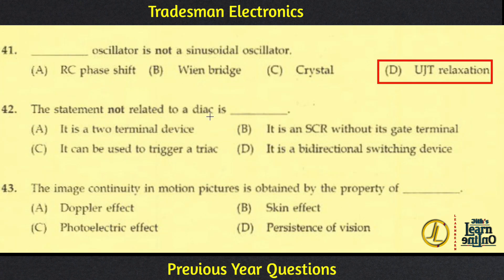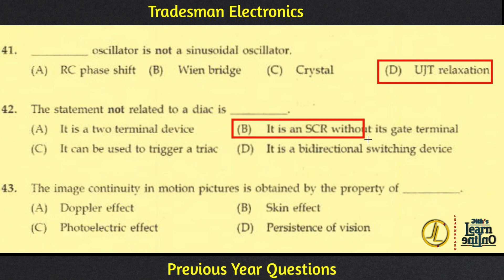The statement NOT related to a DIAC: A DIAC is a two-terminal device. It can be used to trigger a TRIAC. It is a bidirectional switching device. It is an SCR without a gate terminal. It is NOT a unidirectional device — that statement is incorrect regarding a DIAC.